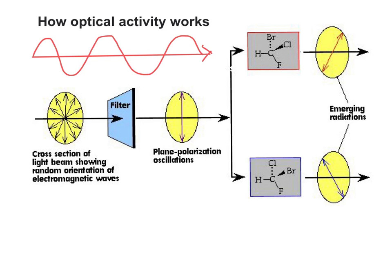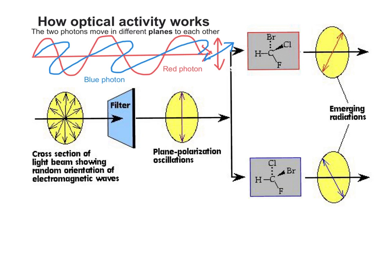Now if we imagine that was one photon travelling, a red photon travelling in that way, we could imagine that the waveform took an up and a down movement. If we then took a blue photon, but it moved at a slightly different angle, the plane of its movement would be different to the plane of the movement of the red photon. So it can be said that the two photons move in different planes to each other. Now obviously, photons can move in lots and lots of different planes.